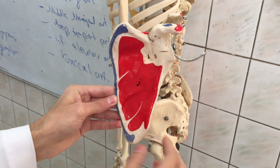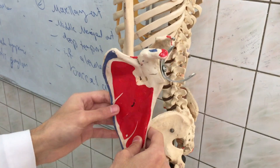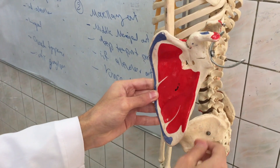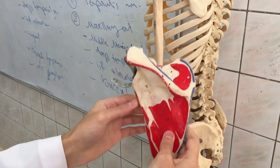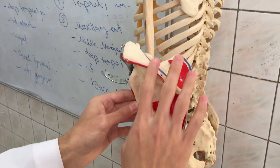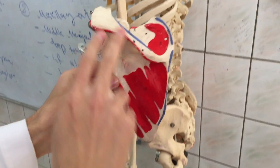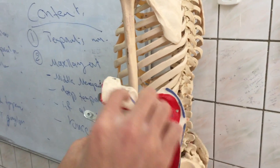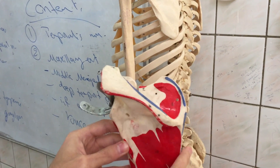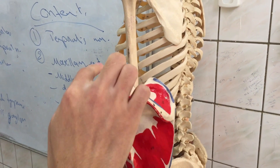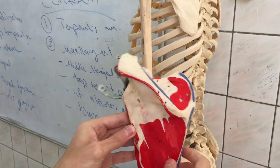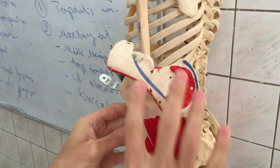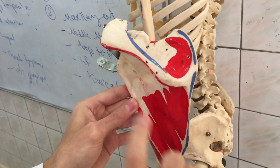The scapula has got a medial border, a lateral border, a superior angle, and an inferior angle. It has got an anterior surface and also a posterior surface. On the posterior surface we've got the spine of the scapula, and at the lateral end of the spine of the scapula we've got the acromion. The spine of the scapula divides the posterior surface into two parts: the supraspinous fossa and the infraspinous fossa.